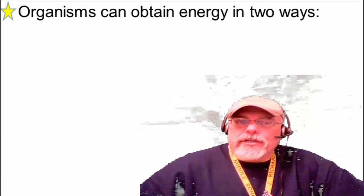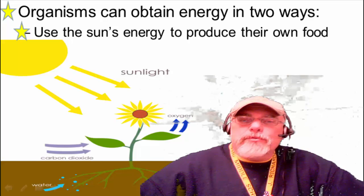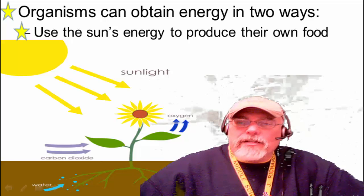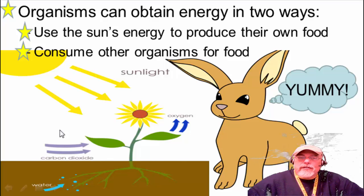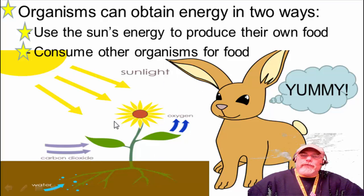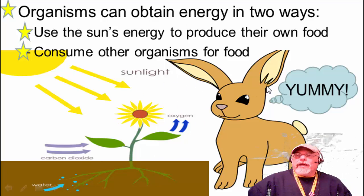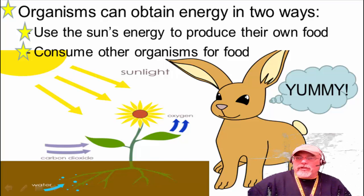In general, organisms can obtain energy in two different ways. The first way is to use the sun's energy directly to produce their own food. The second way would be to consume other organisms for food. So a plant is able to produce its own food, and the rabbit will consume the plant to obtain energy from the plant.